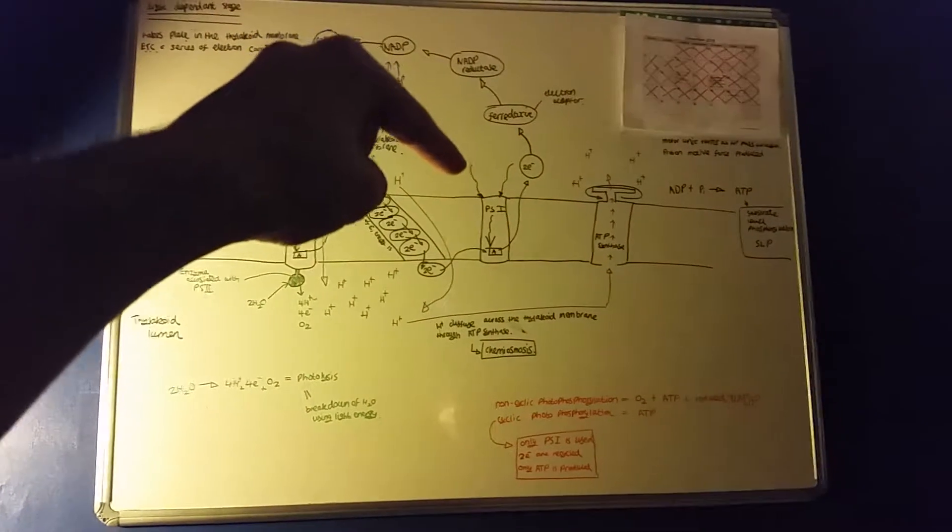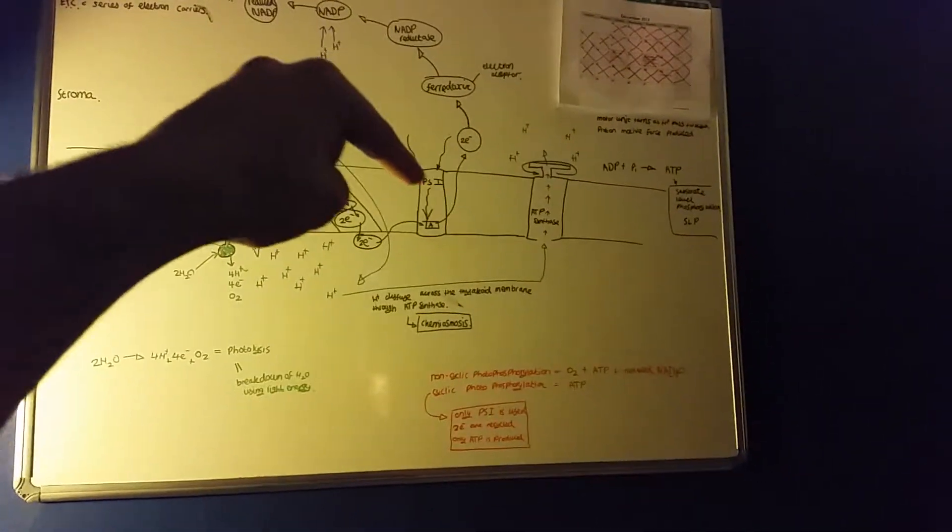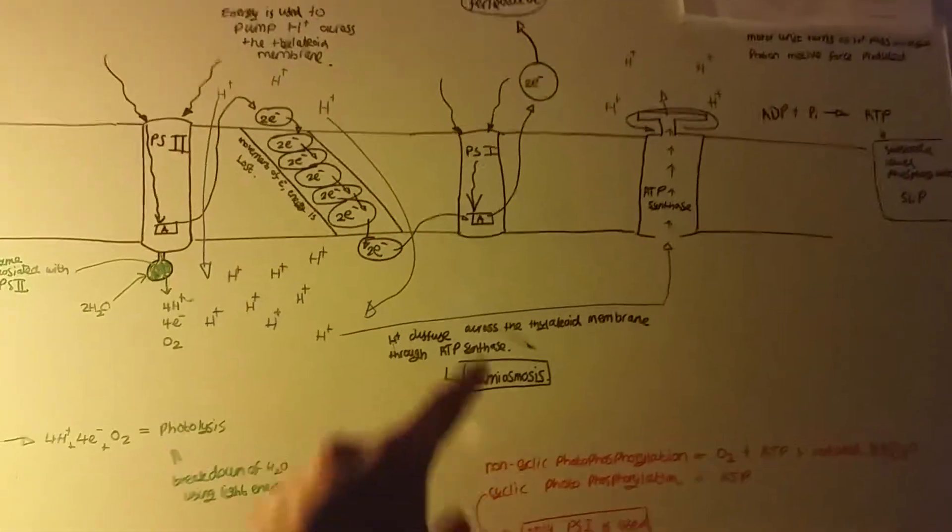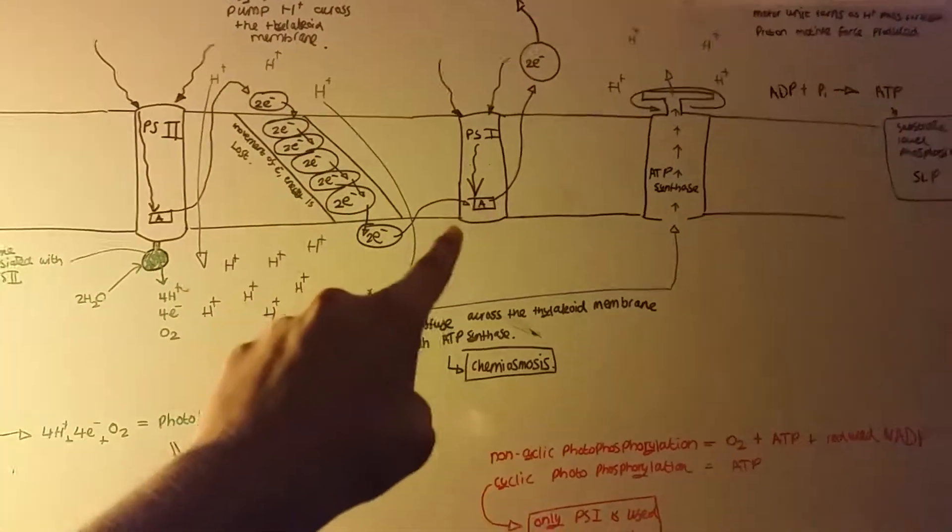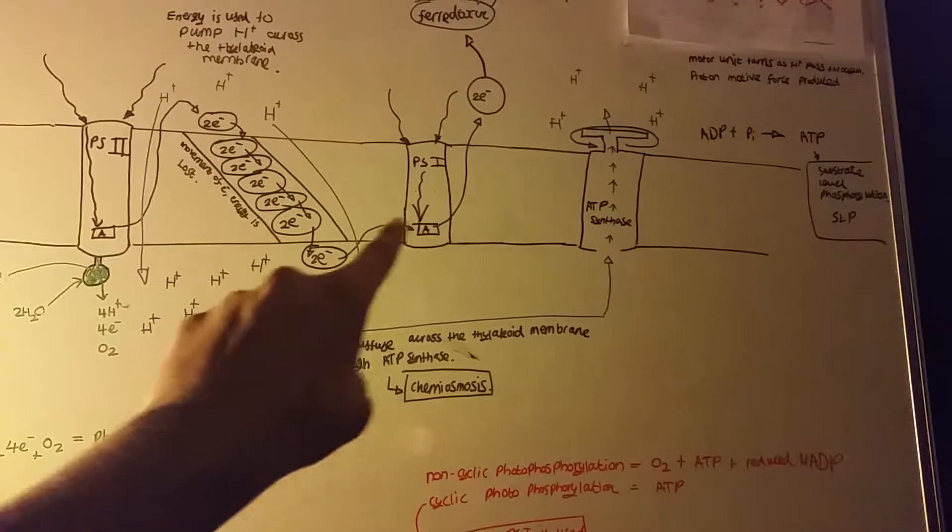Light strikes photosystem I. The energy associated with light travels down the photosystem and reaches chlorophyll A.